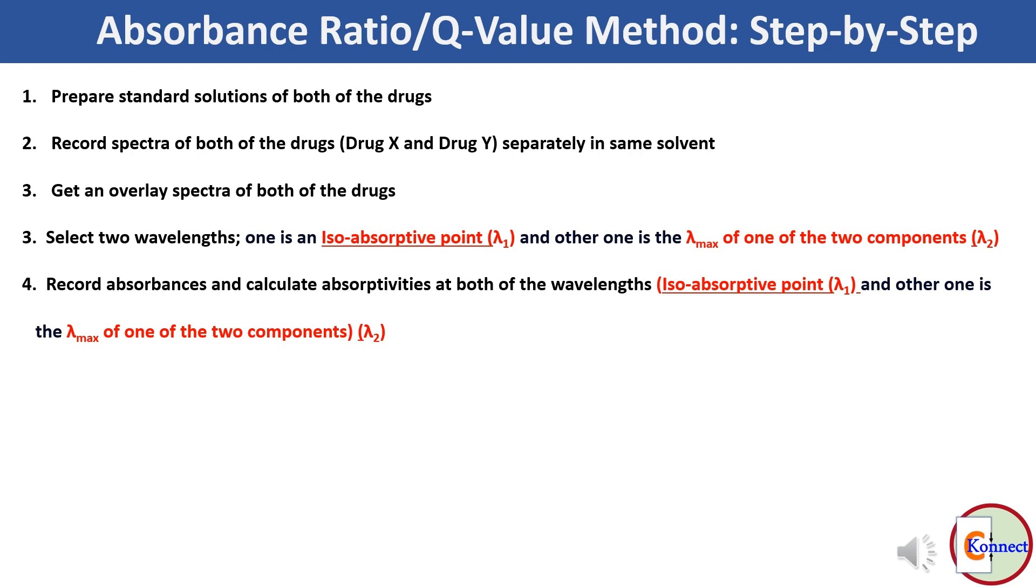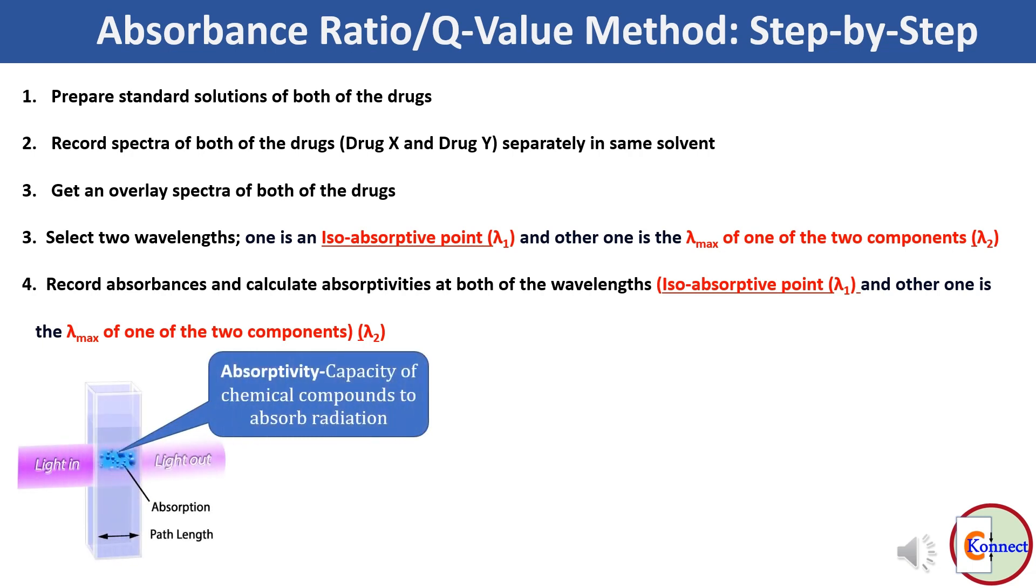Here I would like to let you know about absorptivity, which is the capacity of a chemical compound to absorb radiation. This can be determined by using Beer-Lambert law and its formula A = abc.